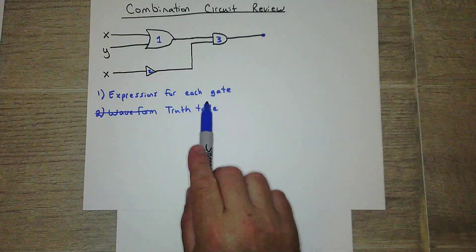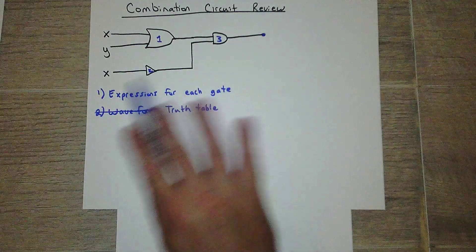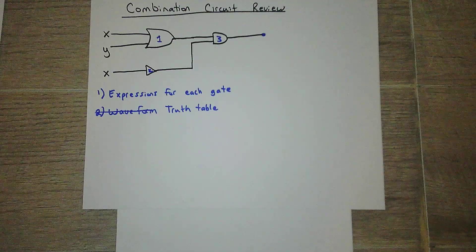So for this circuit, I want you to pause the video. Express, put the expression, the boolean expression, after each gate, and then do a truth table for this. All right, so try that on your own, and then I'll go over it.